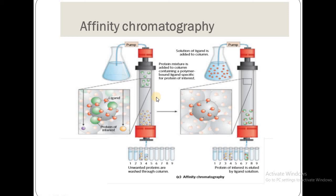When we pass the protein mixture through the column, the unwanted proteins are washed through. Then we add a solution of free ligand again. The unwanted proteins have been washed away, and the protein of interest — which was retained by the bound ligand — is then eluted by the ligand solution.